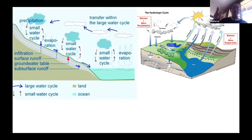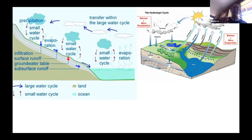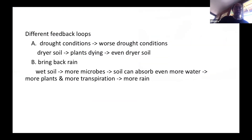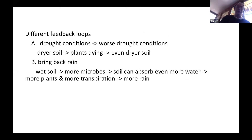These feedback loops include the small water cycle, where rain goes to the soil, then to the plants, then back up to the clouds to create rain again. It also includes rainfall flowing to rivers that overflow into floodplains and riverbanks, feeding the trees there and flowing back up — this can extend for hundreds of miles. Drought conditions can actually create worse drought: drier soil leads to more plants dying, which leads to even drier soil that can't absorb rainfall or grow plants to transpire water back up.